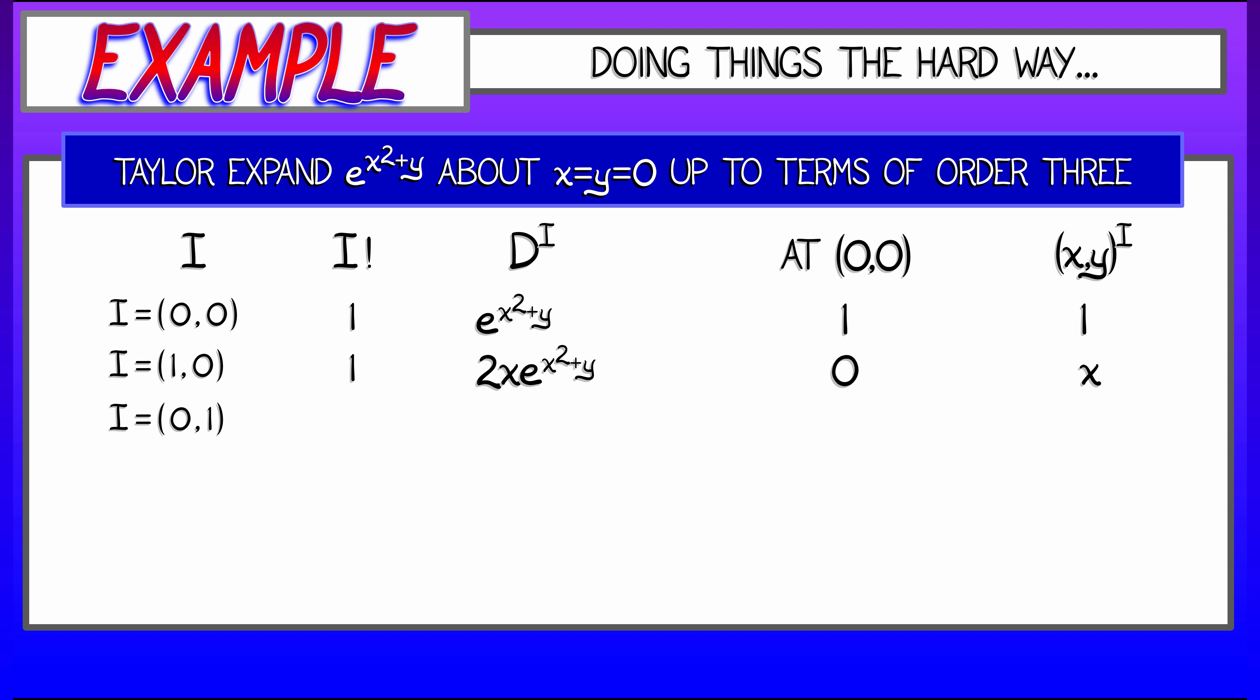So I don't have to worry about that term. Now when I take the partial with respect to y, looking at index 0,1, then again, this just returns e to the x squared plus y. That's nice. Evaluate that at the origin, I get 1, and I have to multiply that by y.